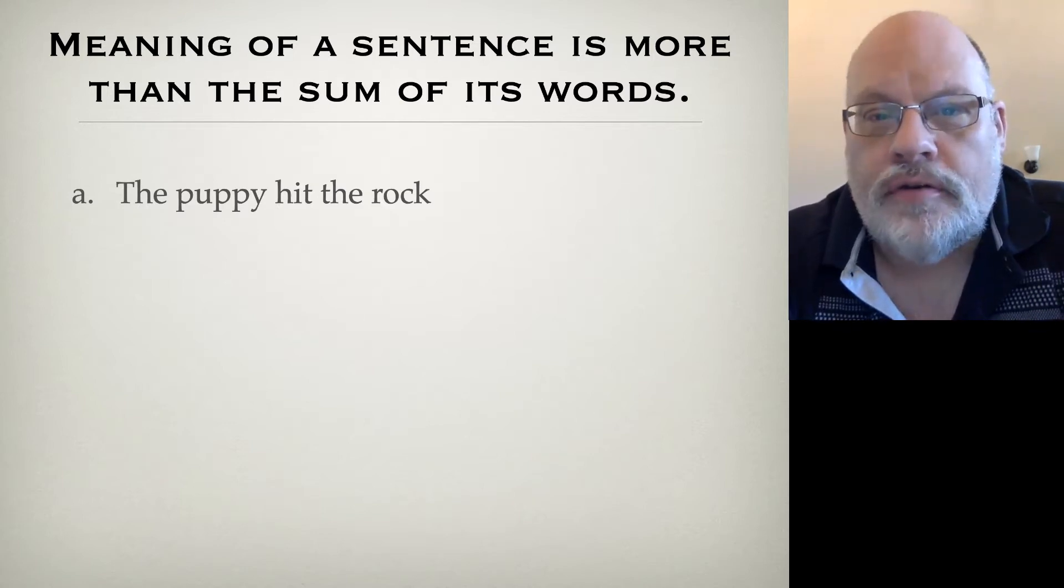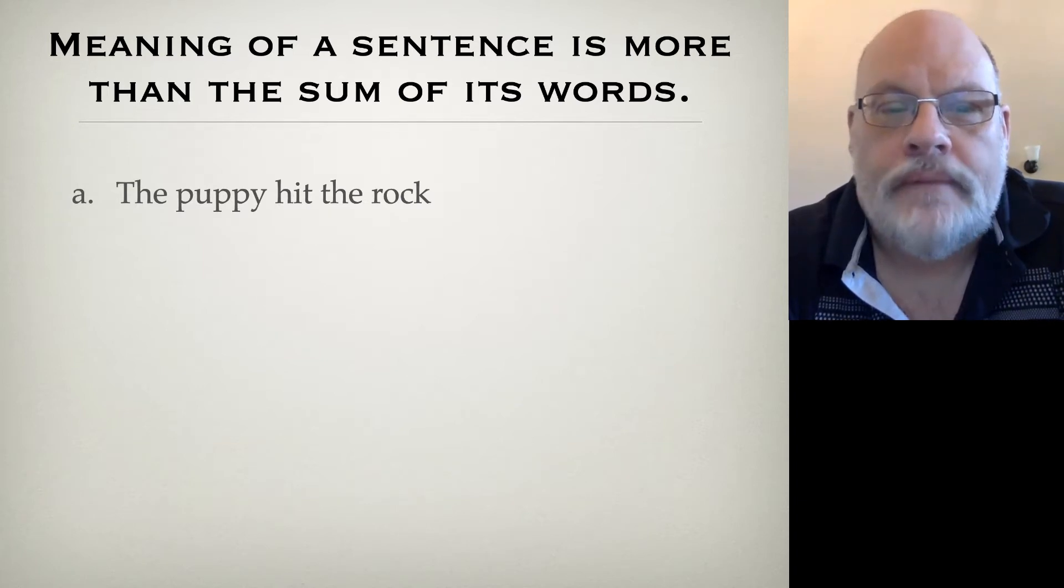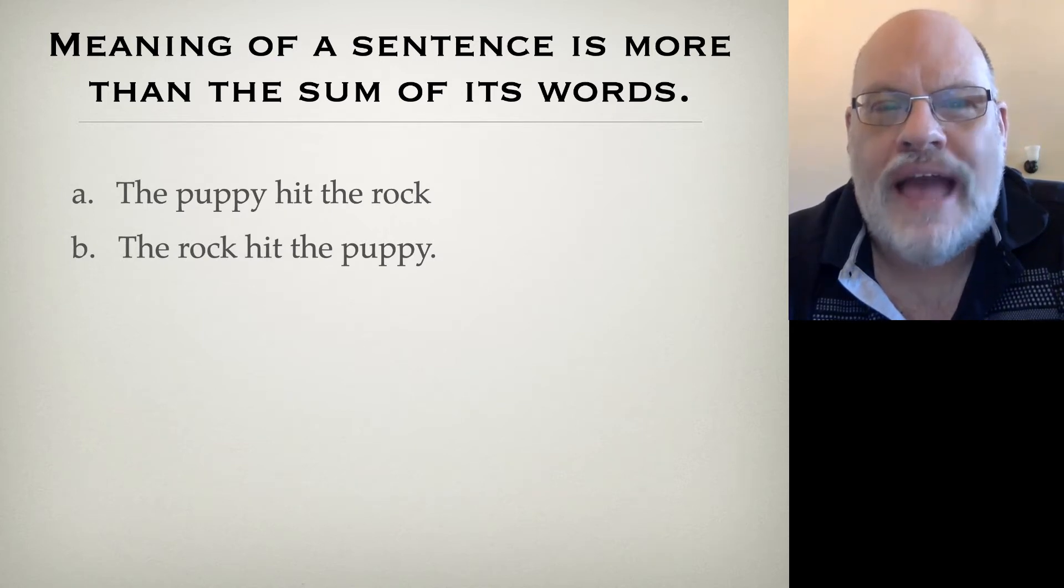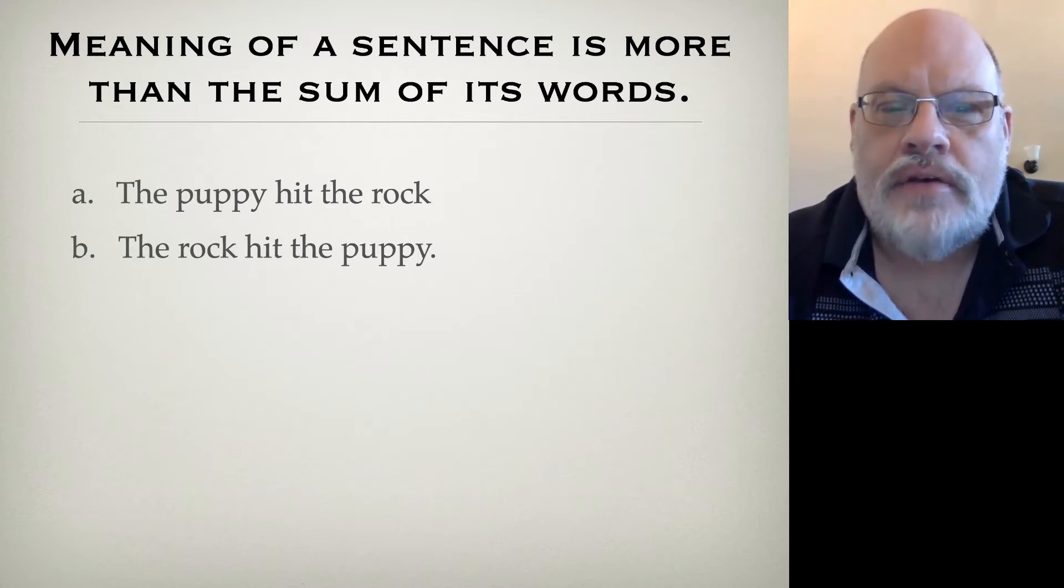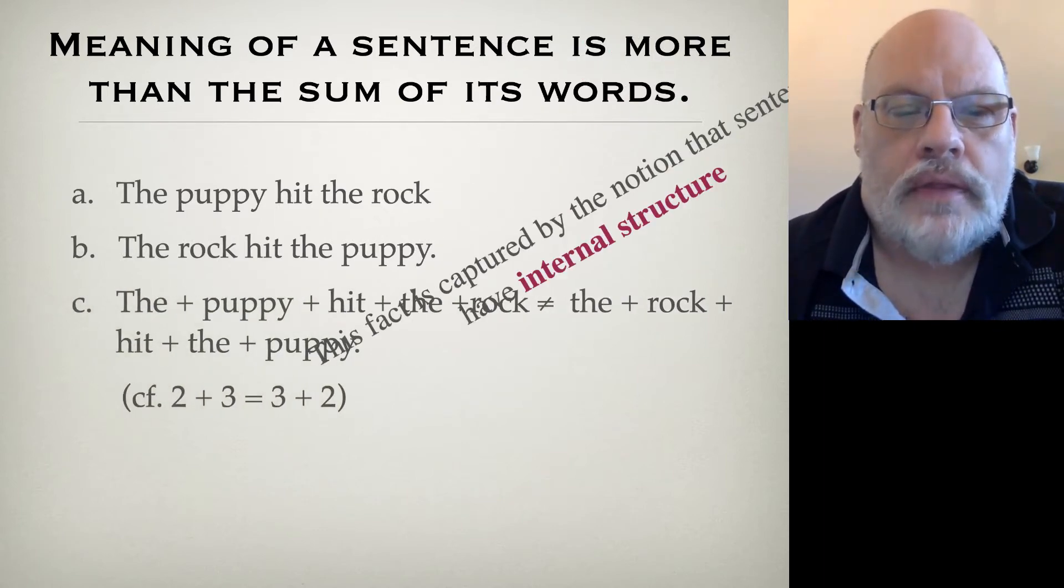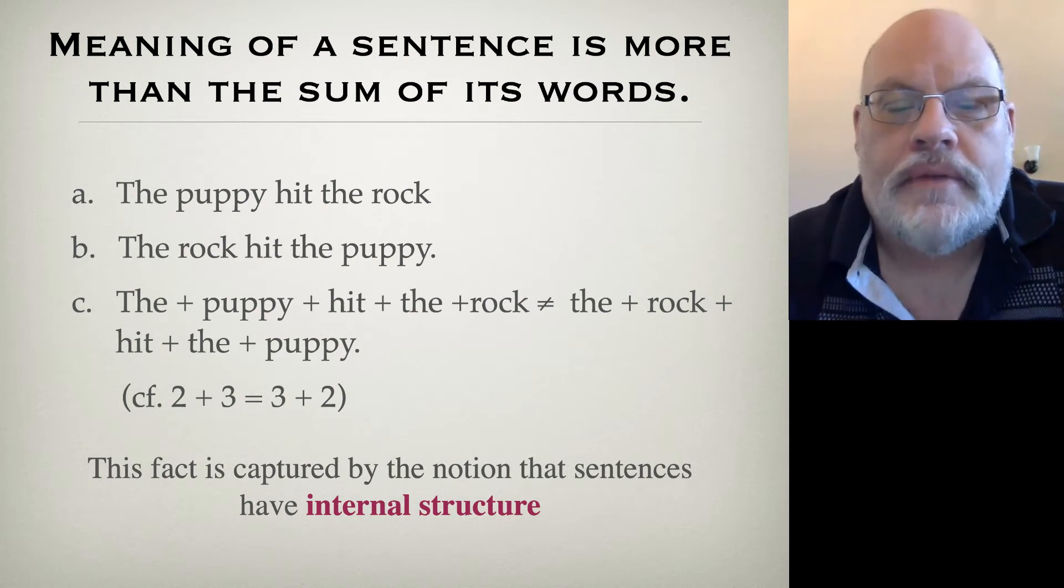This is not true of sentences. For example, the puppy hit the rock means something completely different from the rock hit the puppy. The words are not just adding up. You're not just adding the meaning of each word to the meaning of the next one. Instead, you have some sense in which the puppy is a subject and the rock is an object in sentence A, but the reverse in sentence B. This tells us there's some kind of internal structure.